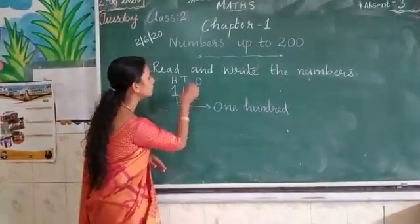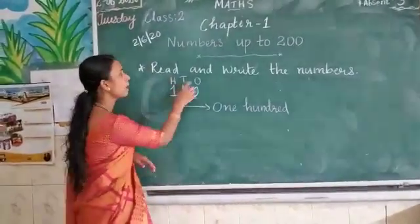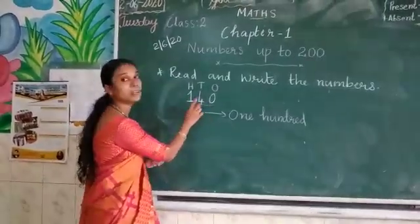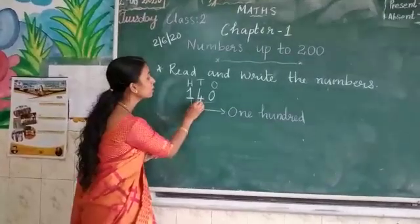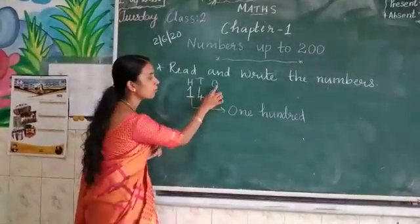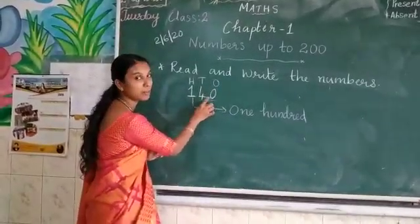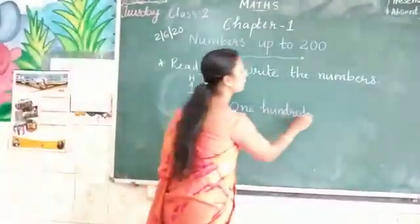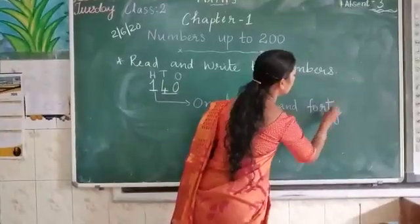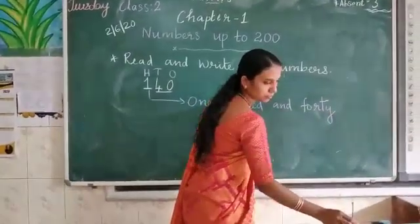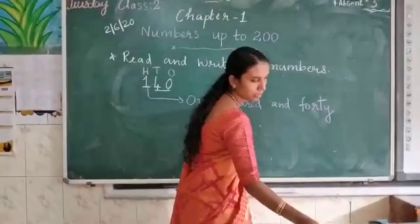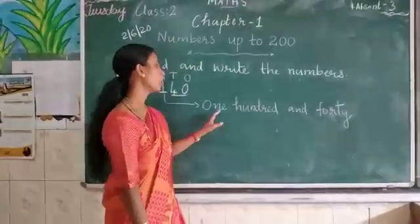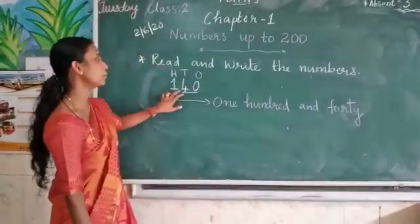Then we look at the tens and ones places and read them together. That means four tens and zero ones. So you can read this number as forty. One hundred and forty. That is how to read a three-digit number — start from the hundreds, then read the tens and ones together.